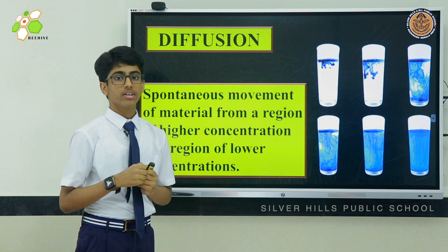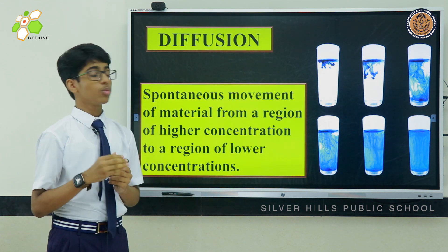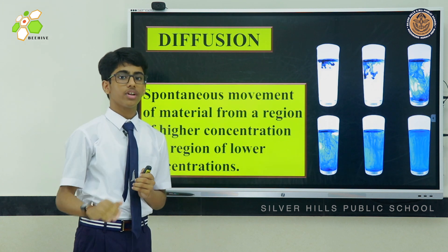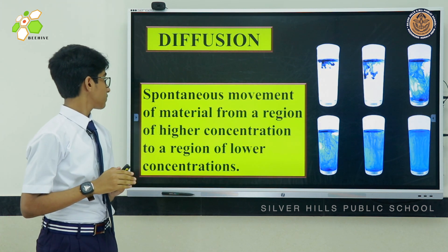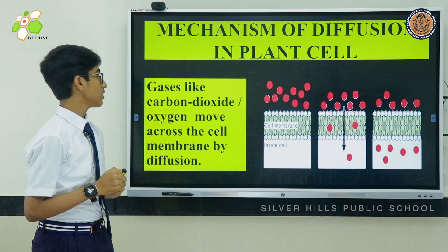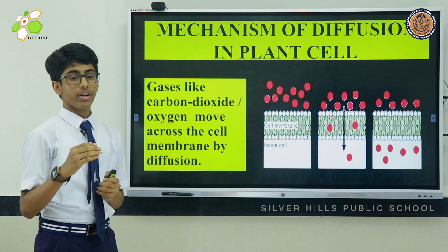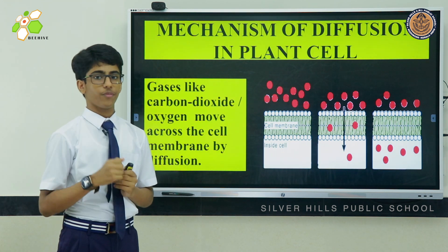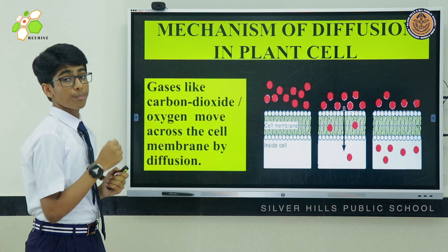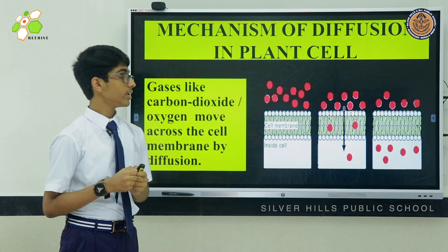Now we are going to discuss about diffusion. It is the spontaneous movement of materials from a region of higher concentration to a region of lower concentration. Gases like carbon dioxide or oxygen move across the cell membrane by the process of diffusion. Here in this picture, the red particles represent gases passing through the cell membrane into the cell.